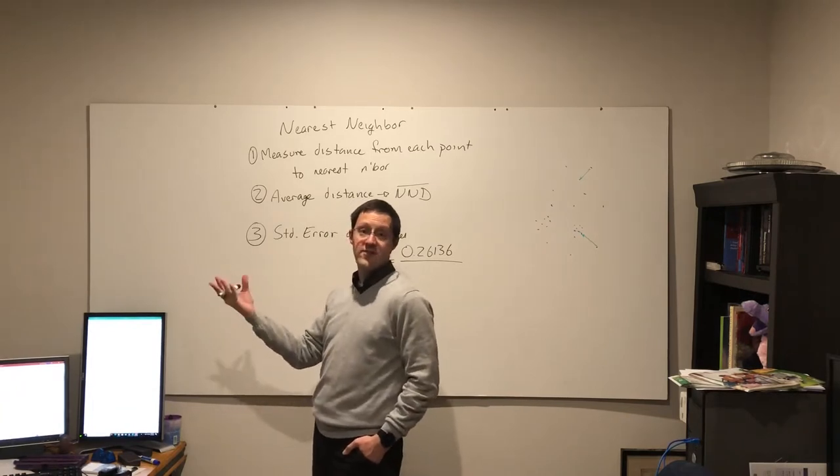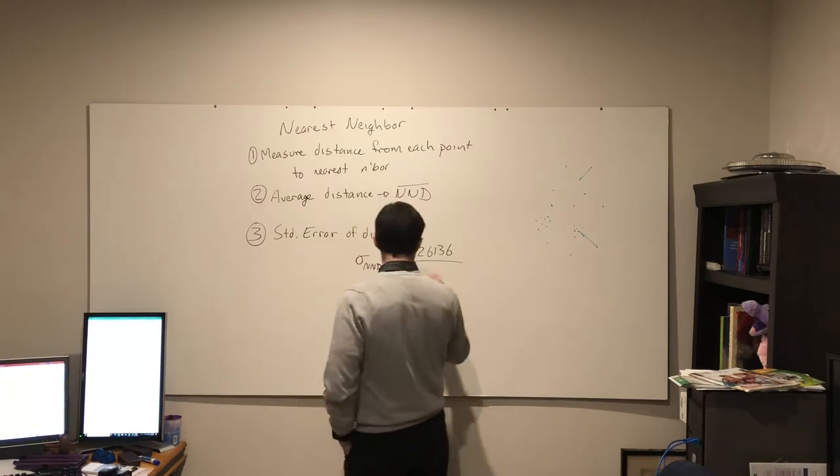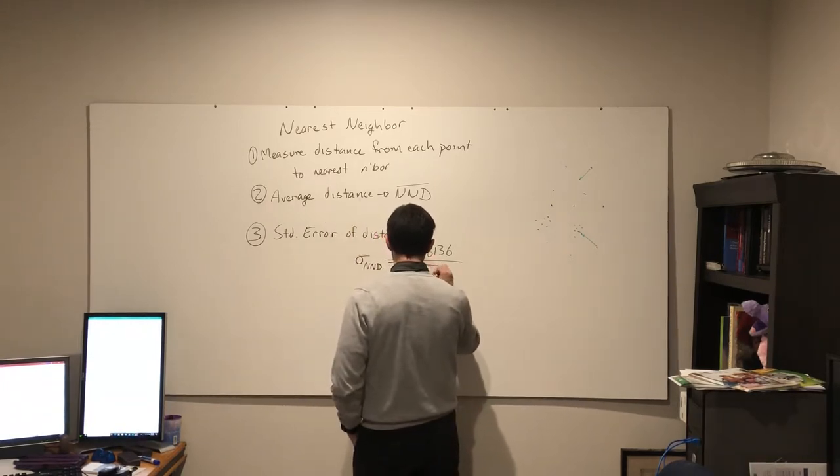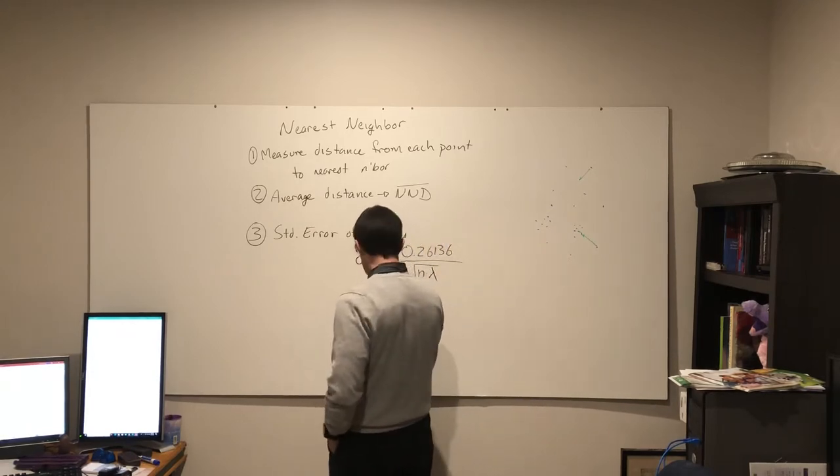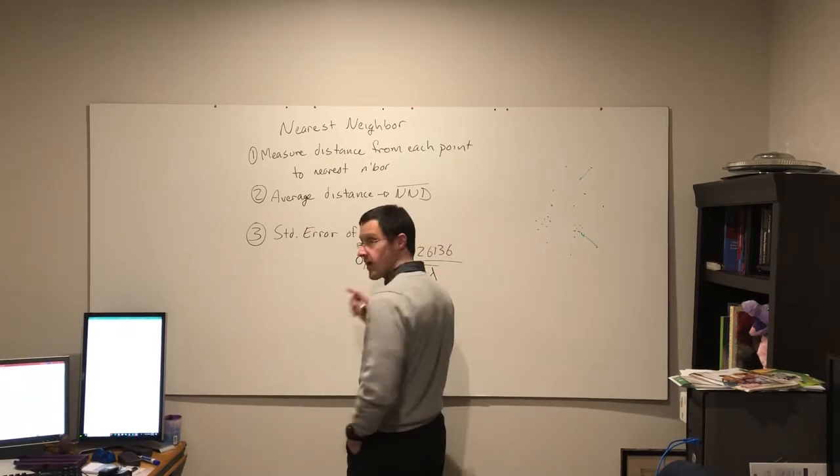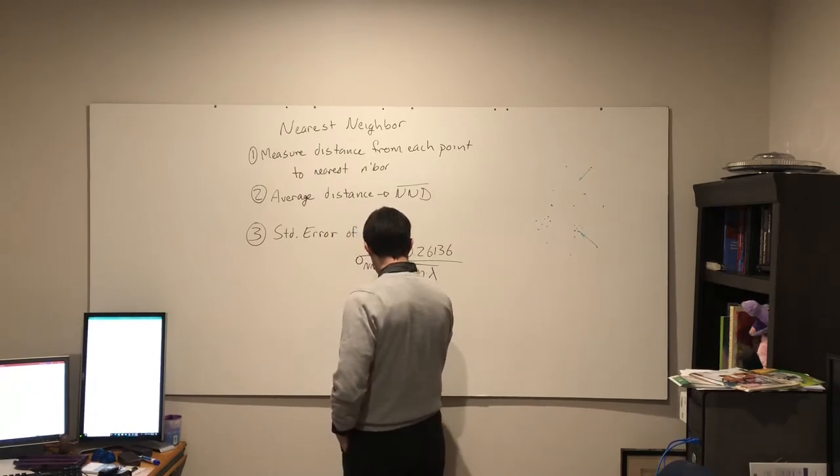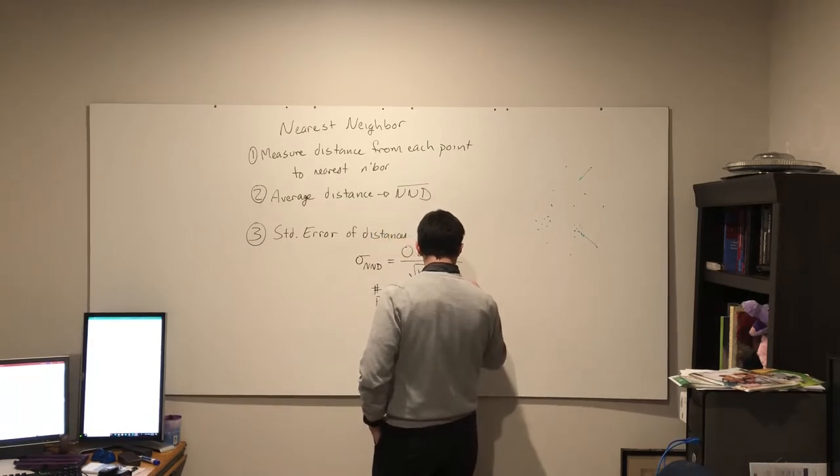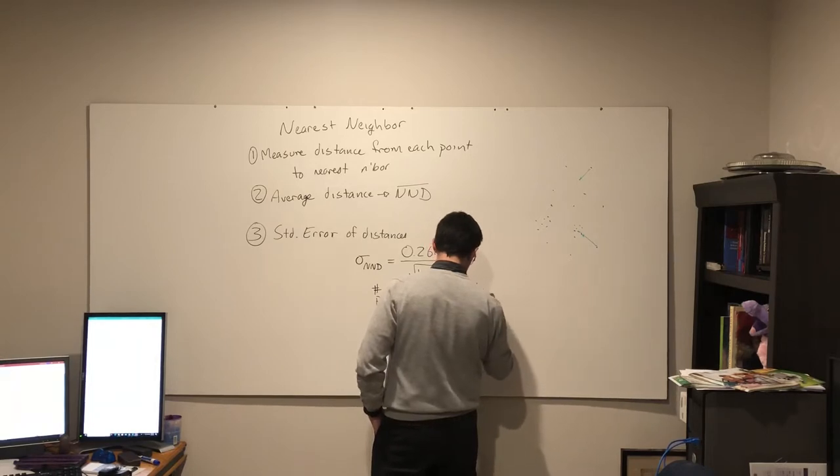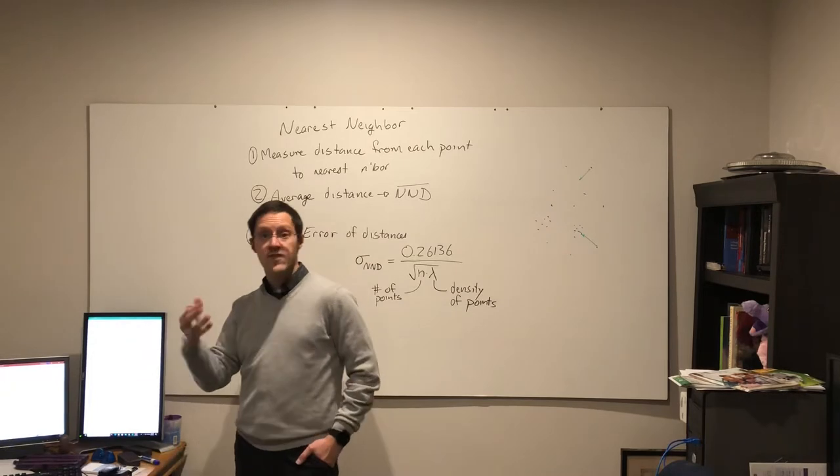That's notated with a sigma NND, sigma of the nearest neighbor distance. And it's that number 0.26136, basically just the number that it is divided by the square root of n times lambda, where n is the number of points as well as their density within the study area.